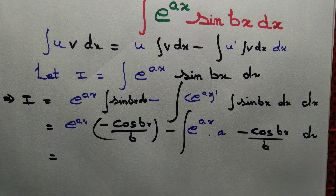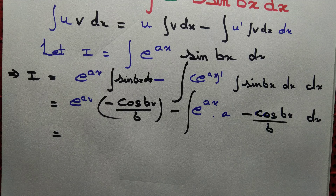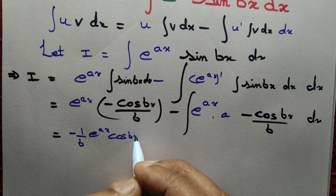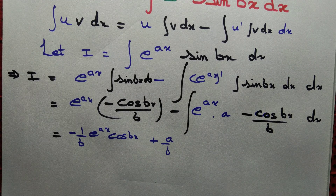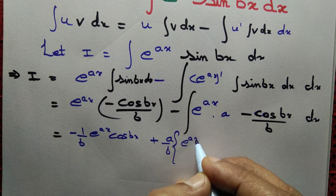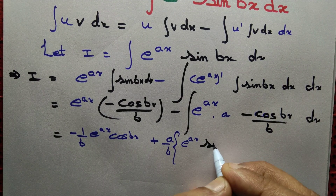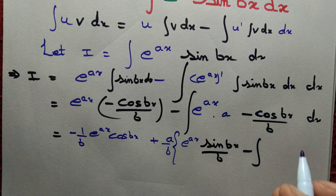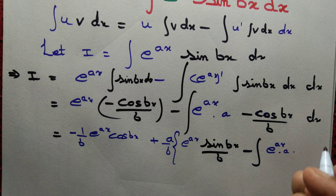So far we have started with the integral and we are still getting some integral that we need to compute. This equals minus 1 by b, e to the power x into cos bx, plus a by b — the constant can be taken out of the integral. Once again, we apply the product rule. First function: e to the power x. Integral of the second function: the integral of cos bx is sin bx by b, minus the integral of the derivative of the first function. The derivative of e to the power x is e to the power x into a, times the integral of cos bx which is sin bx by b.